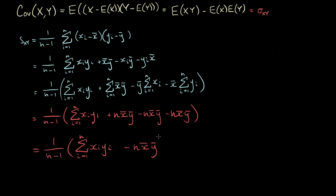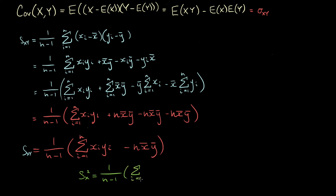This expression is almost identical to the sample variance formula — it's a very close relationship between the covariance and the variance. Just as this close relationship exists in the population formulas, we have a nice relationship between the sample covariance and sample variance: s_x² equals 1 over n minus 1 times the sum from i equals 1 to n of xi squared, minus n times x-bar squared.